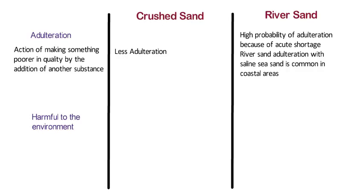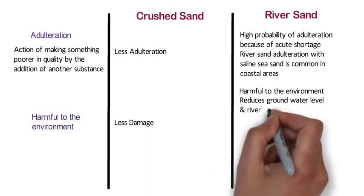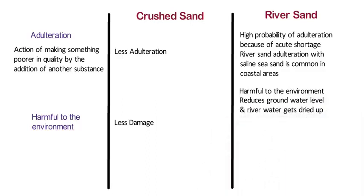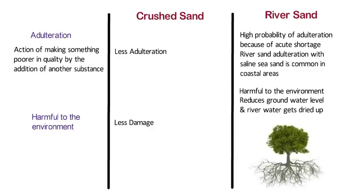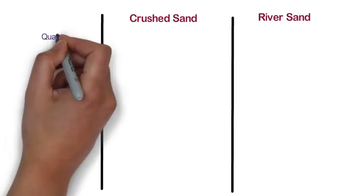Harmful to the Environment: Crushed sand causes less damage to the environment as compared to natural sand, whereas extracting river sand from rivers is harmful to the environment. It reduces the groundwater level and river water gets dried up. The water table level gets reduced due to dragging of sand from the river, and the roots of trees may not be able to get water. In the absence of sand in the river, water gets evaporated due to direct sunlight.